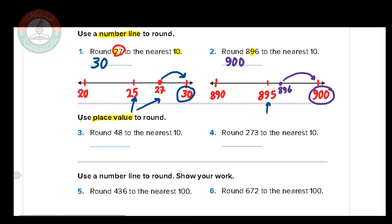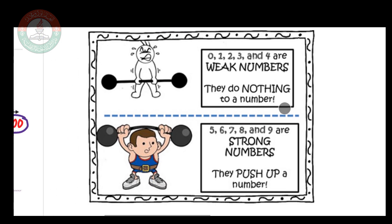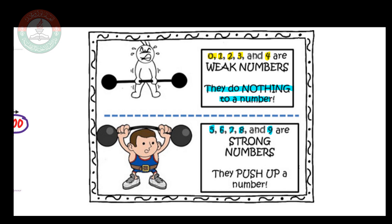We have another way: using place value. Before we use this method, we must understand weak numbers and strong numbers. The weak numbers are 0, 1, 2, 3, and 4. The strong numbers are 5, 6, 7, 8, and 9. Weak numbers do nothing to a number, while strong numbers push a number up.